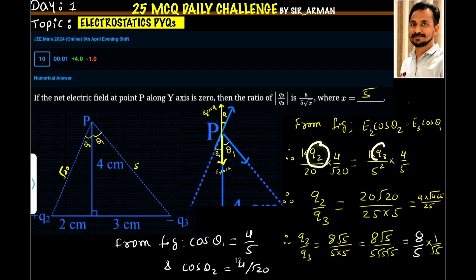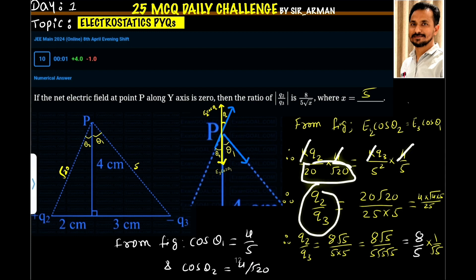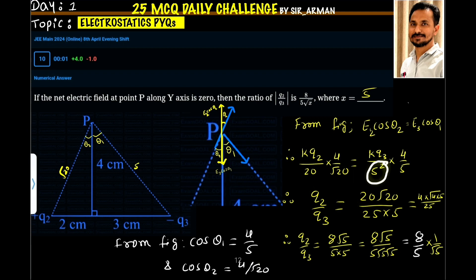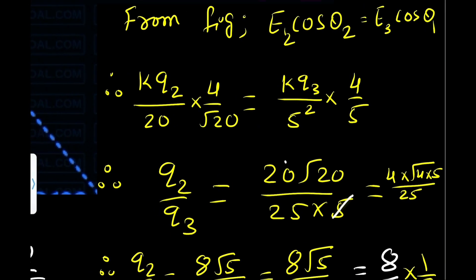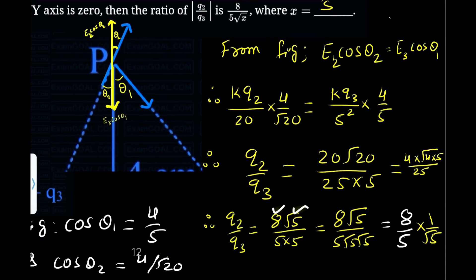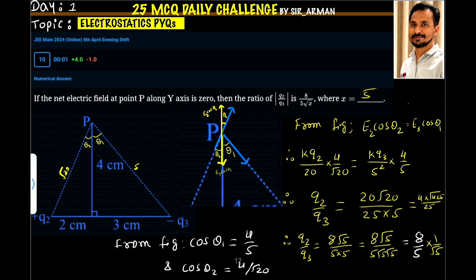Now making Q2 and Q3 the subjects: Q2 by Q3 equals the right-hand side after cancellation. K cancels, and 4 cancels. This gives 20 times root 20 on the numerator side and 25 times 5 on the denominator. Root 20 can be written as root of 4 times 5, which equals 2 root 5. So the numerator becomes 20 times 2 root 5, which is 8 root 5. The denominator is 25, which is 5 times 5, or 5 times root 5 times root 5. One root 5 cancels, giving Q2 by Q3 equals 8 by 5 root 5.